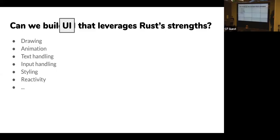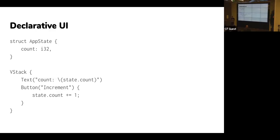Building UI has so many facets — drawing, animation, text handling. I'm going to focus in on the problem of reactivity. You can define reactivity as making a certain kind of code work: writing UI logic that isn't dealing with manually-wired callback handlers, but is instead written in a very straightforward way — here's my app state, here's how the app state gets presented to the views, and here's how interaction changes the app state. That's in contrast to a more traditional object-oriented style where you've got widget objects and have to do all this wiring up of handlers.